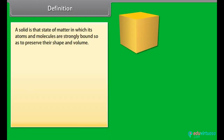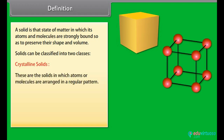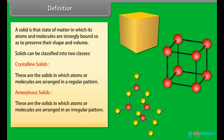A solid is that state of matter in which its atoms and molecules are strongly bound so as to preserve their shape and volume. Solids can be classified into two classes. Number 1: Crystalline solids — these are the solids in which atoms or molecules are arranged in a regular pattern.